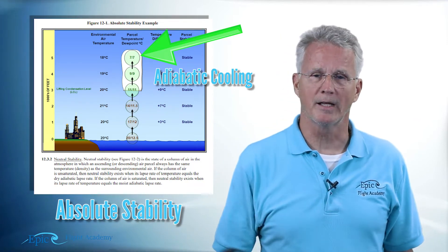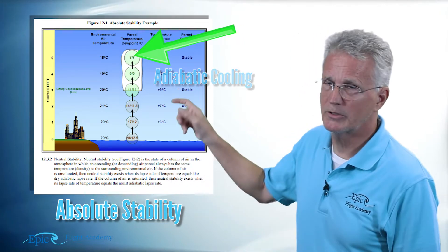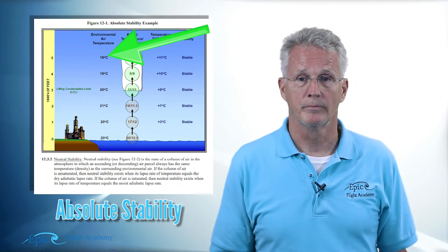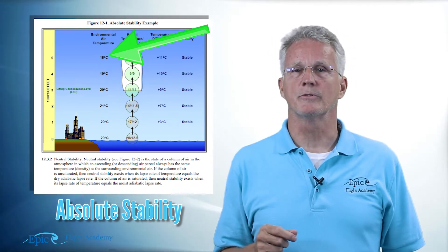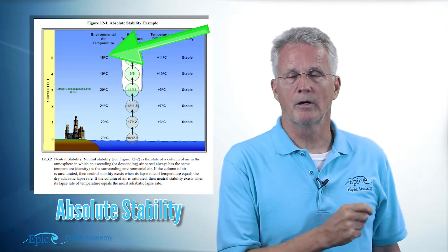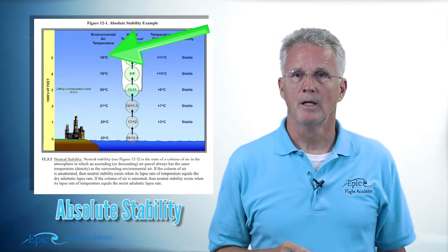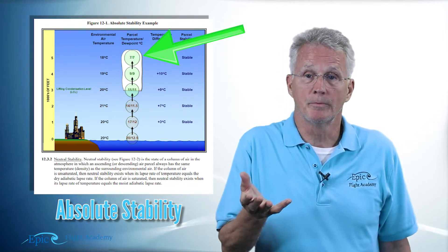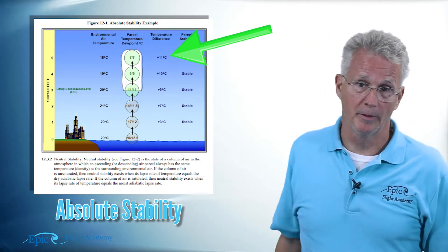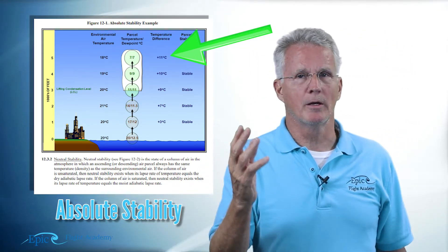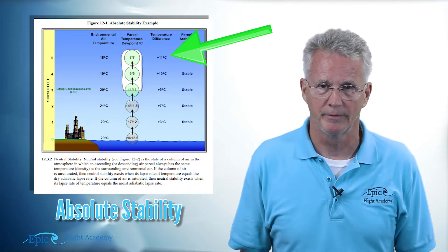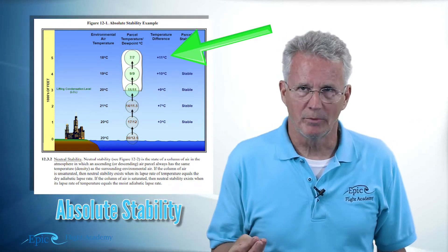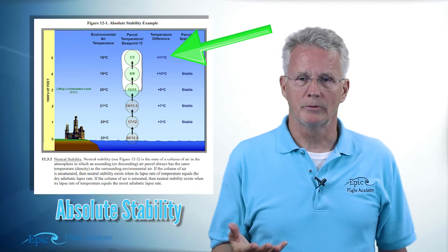To the left of that cloud, look at the temperatures of the surrounding atmospheric air. If we take the difference between the temperature of the surrounding air and the temperature of that parcel as it cools adiabatically, we see that in the third column all the numbers are positive. That means this air is stable. We call that absolute stability.